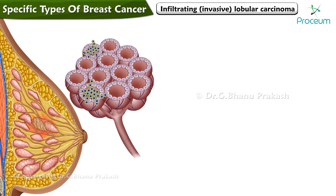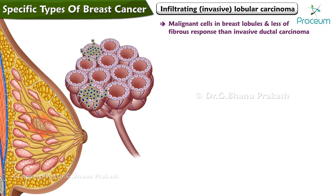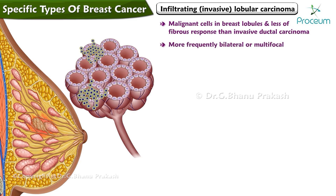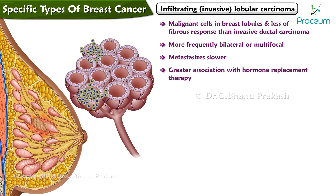Clinical findings associated with infiltrating ductal carcinoma include firm palpable mass, skin dimpling, nipple retraction, and nipple discharge. Infiltrating invasive lobular carcinoma is characterized by malignant cells in the breast lobules with less of a fibrous response than invasive ductal carcinoma. It is more frequently bilateral or multifocal, metastasizes more slowly, and has a greater association with hormone replacement therapy.